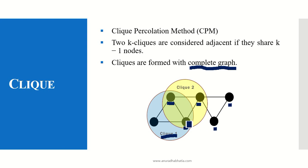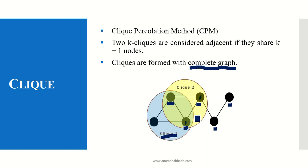If you consider these 3 nodes — this node, this node, and the 3rd one — these 3 are not forming a complete graph, so they do not form a clique. Any 3 nodes which are connected properly to each other and form a complete graph is known as a clique. In this example, we have 2 cliques formed and a 3rd clique can be formed over here.